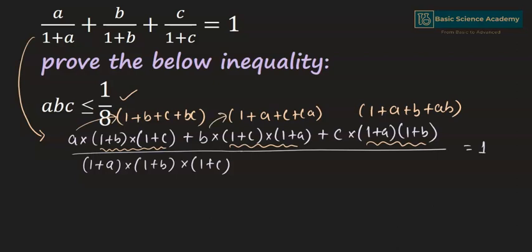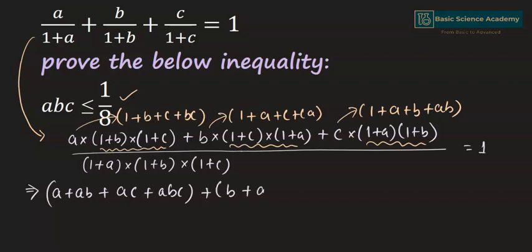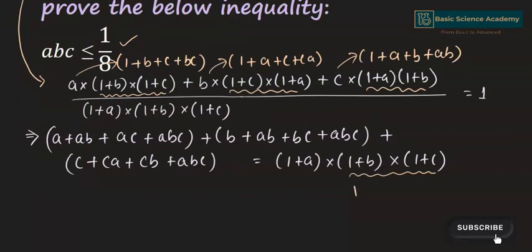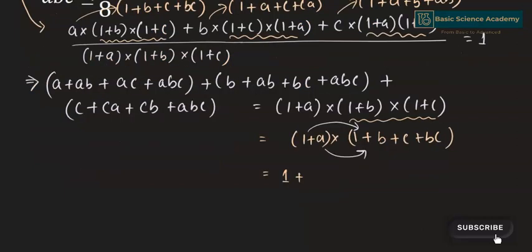Multiplying through by a, b, and c gives a + ab + ac + abc + b + ab + bc + abc + c + ca + cb + abc. The right-hand side, (1+a)(1+b)(1+c), expands to 1 + b + c + bc + a + ab + ac + abc.